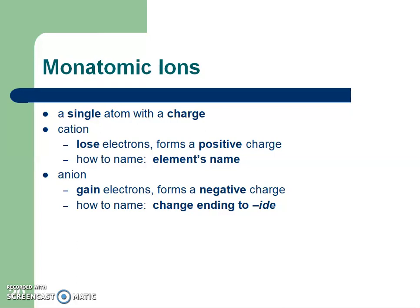Mono means one, so we're talking about a single atom with a charge. You know this information about cations — and the only thing I'm going to say is now you need to understand that those cations, you're just going to use that element's name. However, when we're talking about those anions — when we're talking about those nonmetals — we're going to have to change the ending of those nonmetals to -ide. In Chapter 7, we already learned that we're going to take those nonmetals and change those endings to -ide.